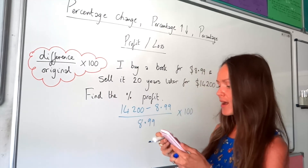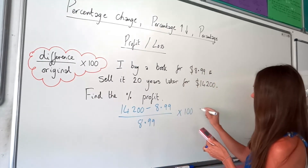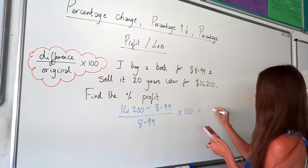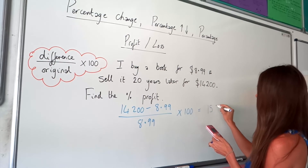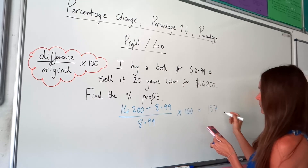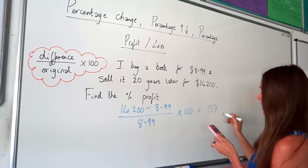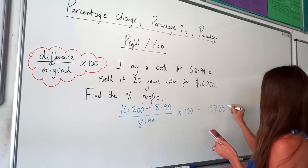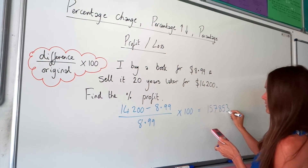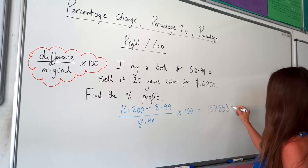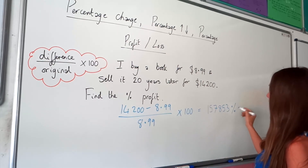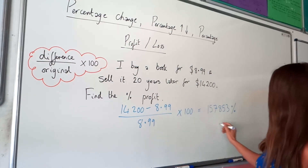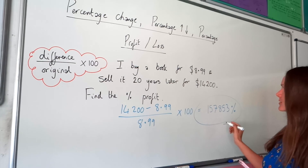So if I do that in the calculator, I get a really huge number — I get 157,853 to the nearest whole number, and that's a percentage. So that's the final answer.